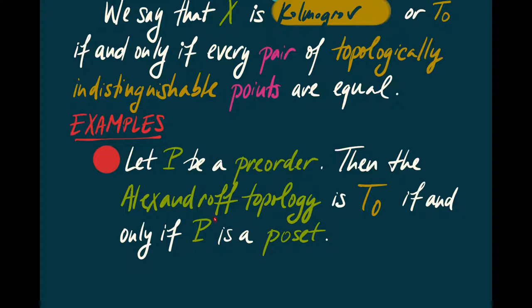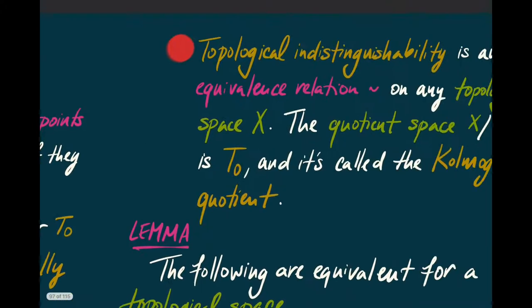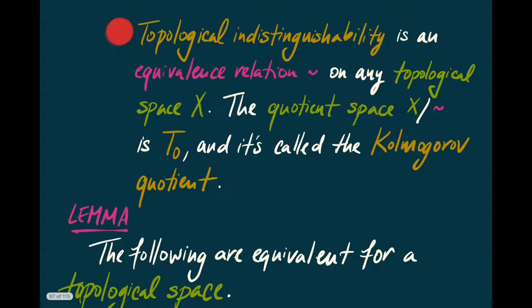Remember, P being a poset means that if x ≤ y and y ≤ x, then x and y are equal. A more sophisticated example: topological indistinguishability is an equivalence relation on any topological space. If we say x and y are similar if and only if they are topologically indistinguishable, we can form the quotient space with respect to that equivalence relation, and that quotient space will be T0 essentially by definition. This is called the Kolmogorov quotient, and it appears in analysis all the time.